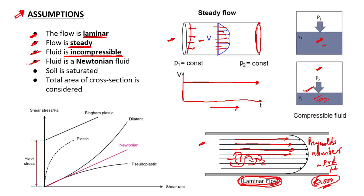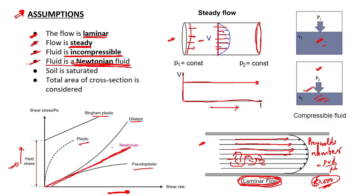This is the graph showing Newtonian fluid behavior — applied stress versus shear rate. You can see all these different materials having different properties. But here only Newtonian fluid should be present, or we can assume it as the Newtonian fluid if you want to apply this formula. Fifth assumption is that the soil is saturated — the whole cylindrical pipe or the whole aquifer should be completely filled with water.